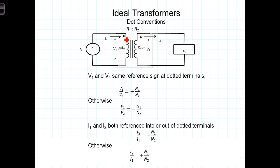So for example, here with this dotted terminal, we've got V1 referenced positive at the dot, and V2 is referenced positive at the dot. So V1 and V2 both have the same sign reference at the dot. Therefore, V1 and V2 will be of the same sign.